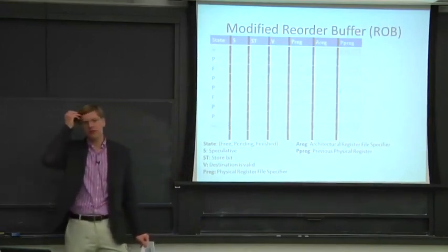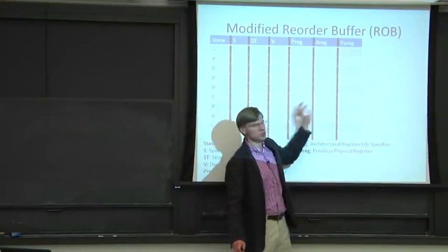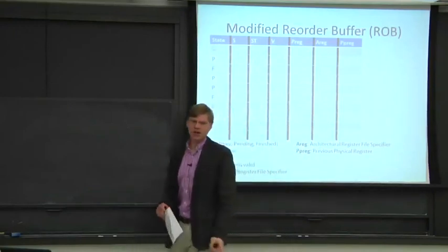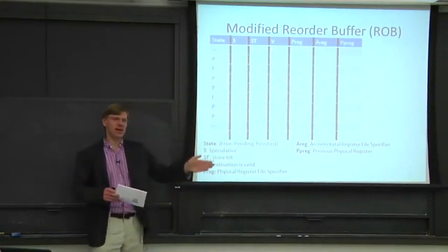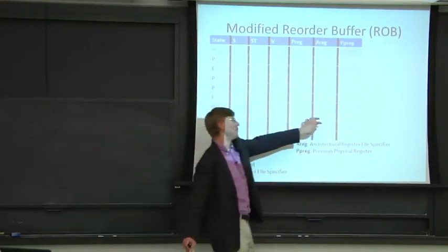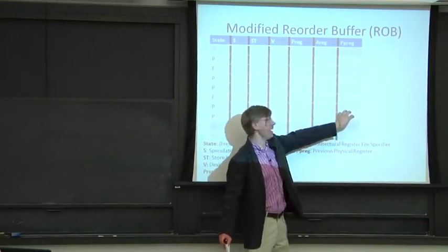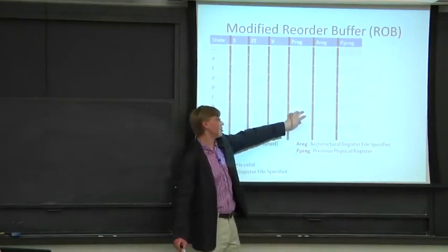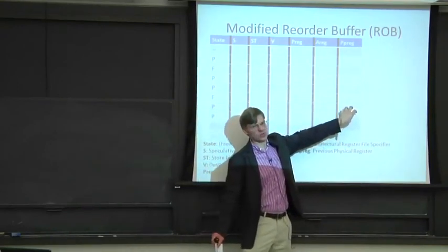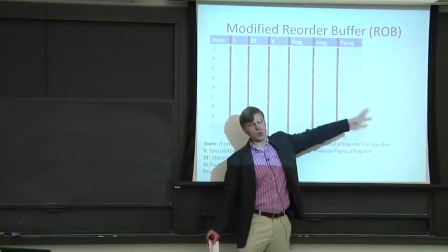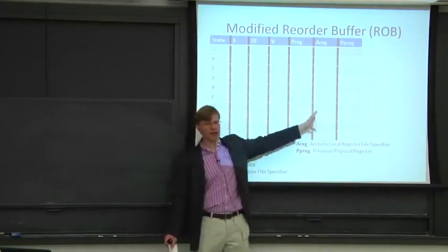The previous physical register field tells us: we wrote a new value of register four to, say, physical register 30, which means the old physical register 27 that previously held register four's value needs to be deallocated. We can do that when we reach the end of the pipe by committing this instruction out of the reorder buffer and cleaning up all the state.